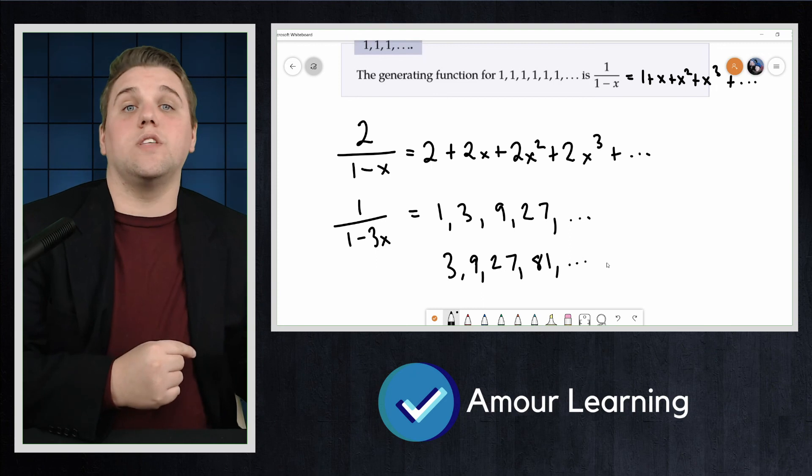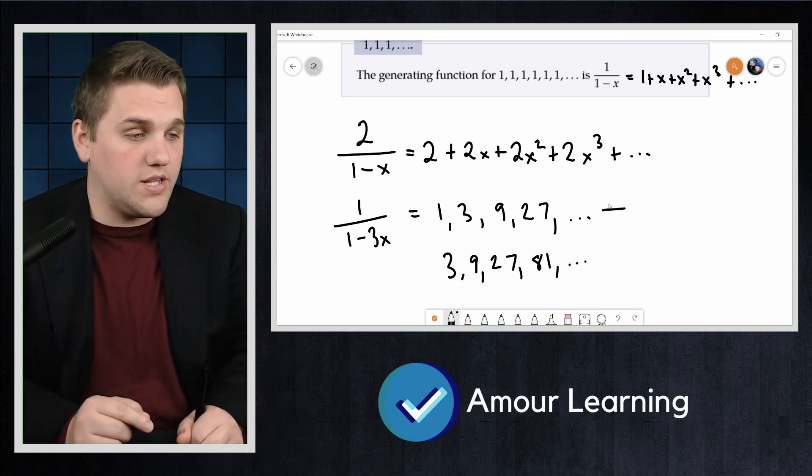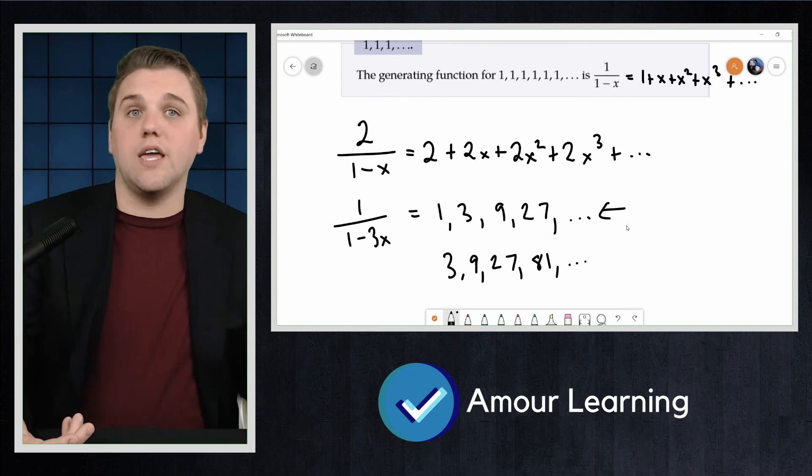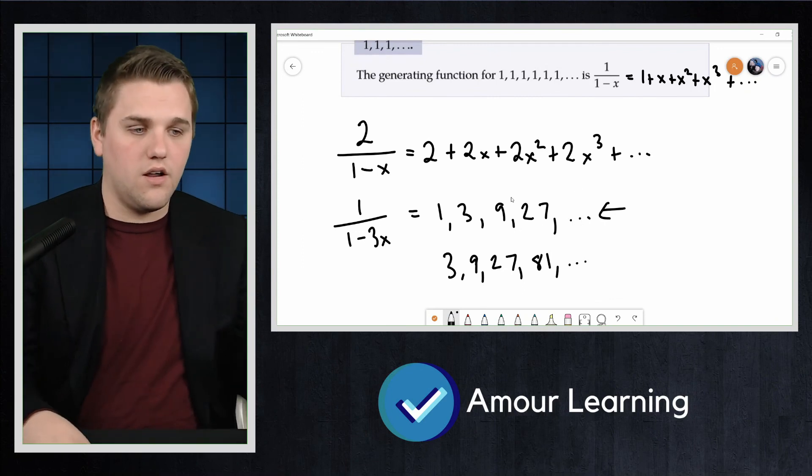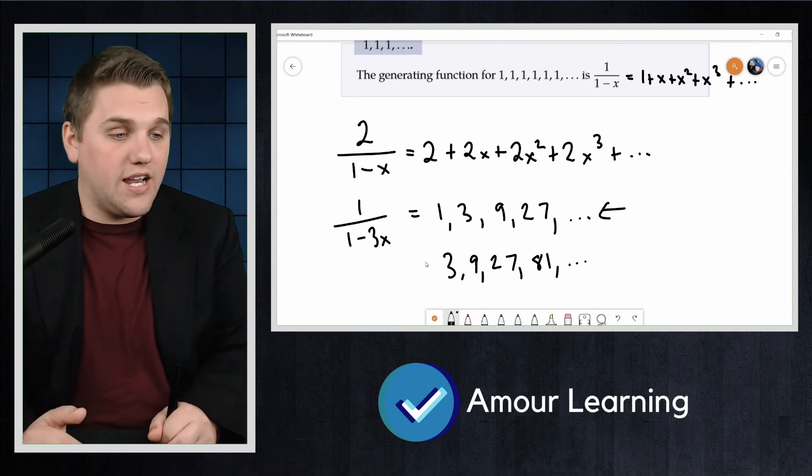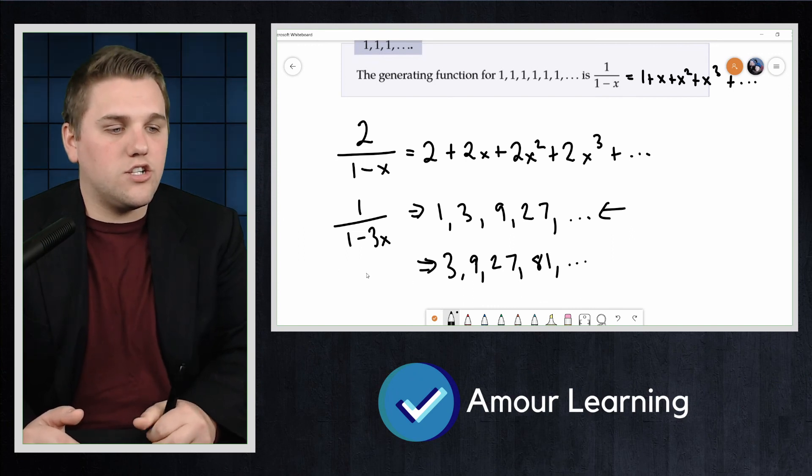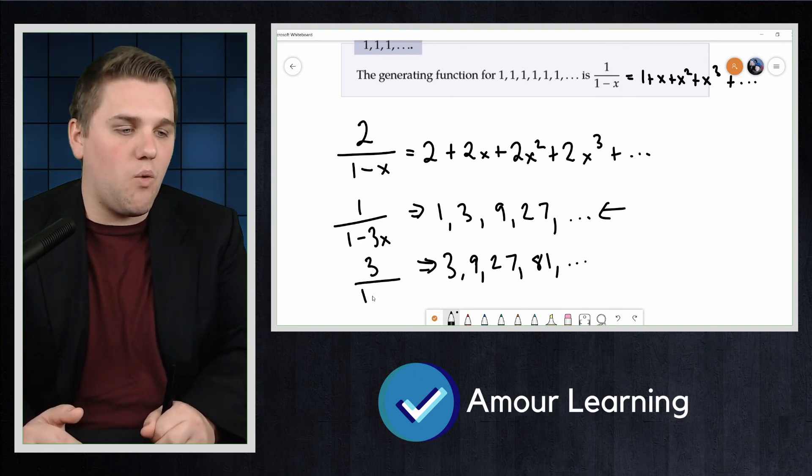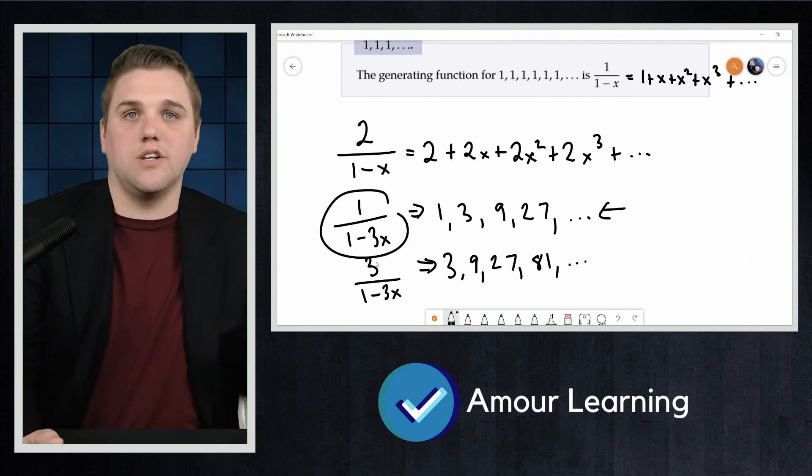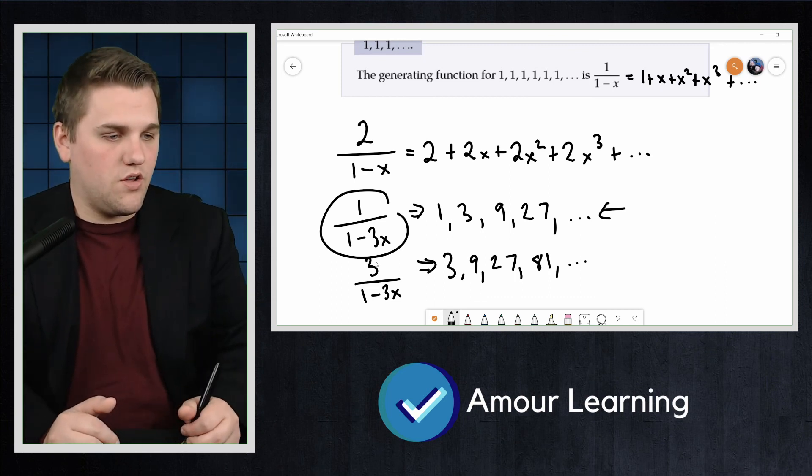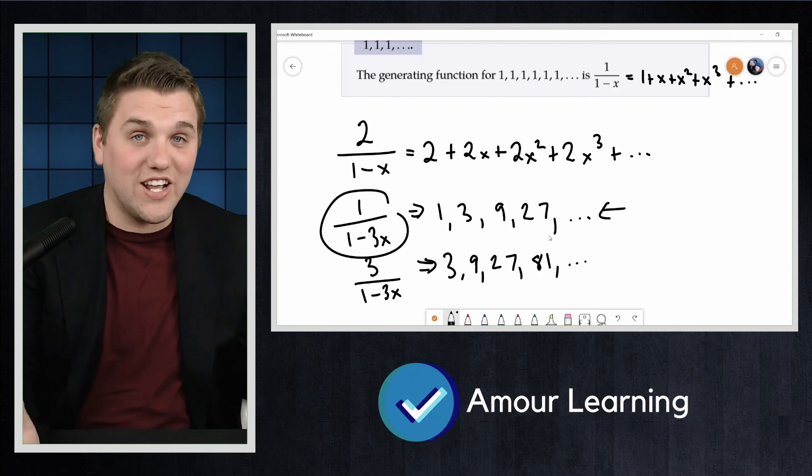Well, we know that this sequence is the result of multiplying each term from the previous sequence by 3. Since we have the generating function for that sequence, we can say this sequence is generated by the function 3/(1-3x), or 3 times that function. So this generates 3, 9, 27, 81. Thanks everyone, and I'll see you in the next video.